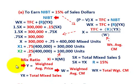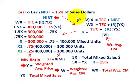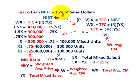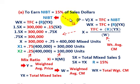Case 1: earn net income before taxes at 15% of sales dollars. Our general equation is the weighted average contribution margin times X equals total fixed cost plus net income before taxes at 15% of sales dollars. Net income before taxes is the rate of 15% times total mixed sales YX. We solve for X, and going through the general terms: price less variable cost times quantity equals total fixed cost plus net income before taxes, with net income as that rate times total mixed sales.